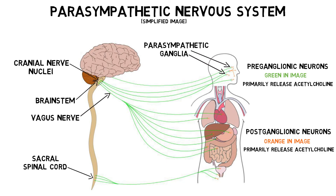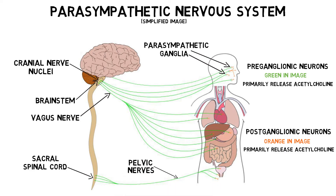The preganglionic neurons that originate in the sacral spinal cord come together to form the pelvic nerves, which supply the organs of the pelvis.